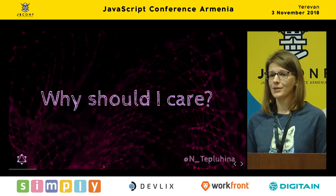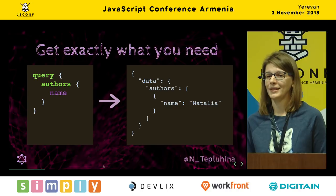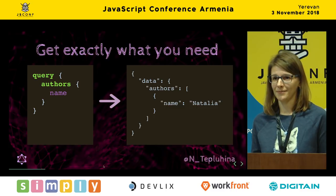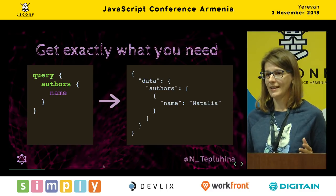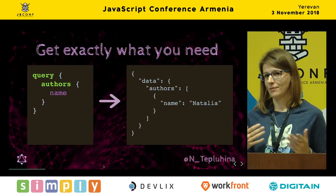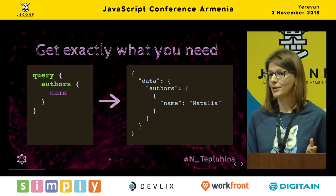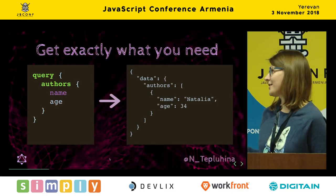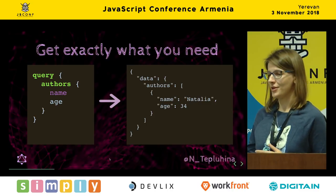The first and most important feature of GraphQL, from my point of view, is getting exactly what you need. In GraphQL, you can form a response with your request. We have a query for an authors array and we're fetching only a name of each author. But if we need an age, it's simple — you don't need to add an additional endpoint. GraphQL has a single endpoint for all your queries. You just change your request, add the property 'age,' and if your schema allows it, you fetch age immediately.